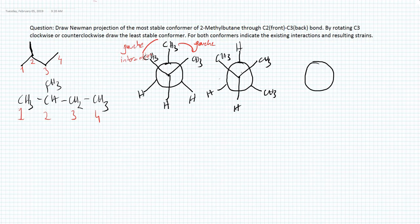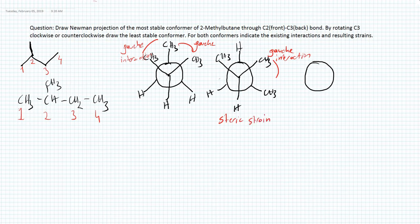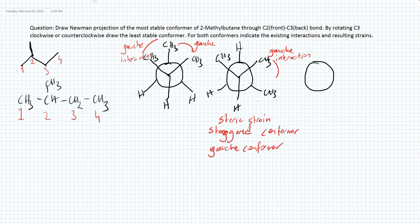We can conclude that the second drawn conformer is the most stable conformer. It has only one gauche interaction between methyl groups, which causes one steric strain. This conformer is called a staggered conformer, and more specifically a gauche conformer, because the two methyl groups are 60 degrees apart from each other.